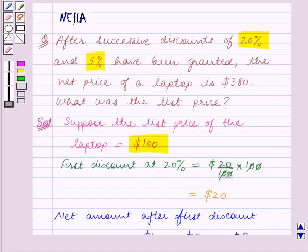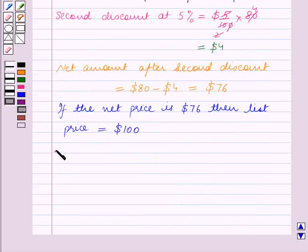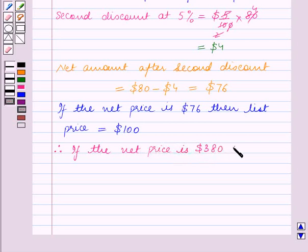In the question we are given that net price of the laptop is $380 and we have to find the list price. Therefore, if the net price is $380, then list price is equal to 100 upon 76 into $380.